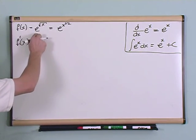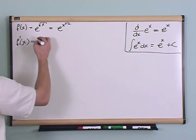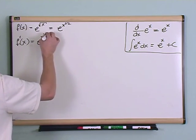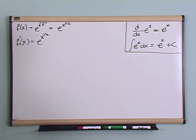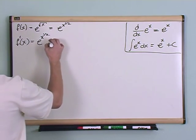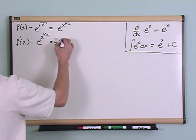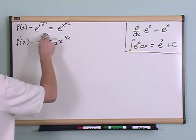So this is going to be e to the x to the one half, times the derivative of the exponent here. The derivative of the exponent is one half x to the negative one half. One half comes in.